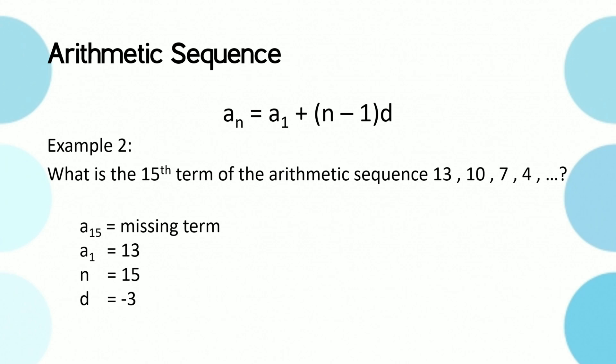Then by substitution, a_15 is equal to 13 plus (15 - 1) multiplied to negative 3. Thus a_15 is equal to negative 29.